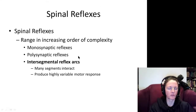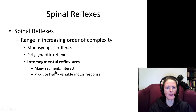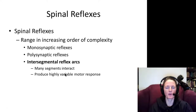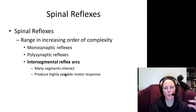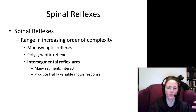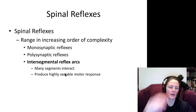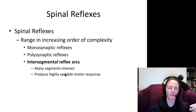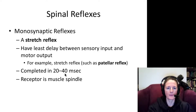Polysynaptic reflexes have multiple synapses in the circuit and may involve more than one segment of the spinal cord. The simplest monosynaptic reflexes typically take place at one spinal cord segment, whereas polysynaptic reflexes may involve several segments and several different areas of the body.